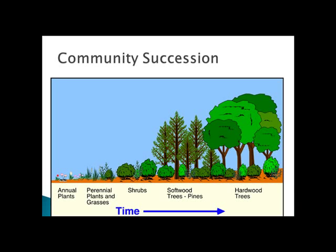Natural changes in a community take place over time, and that's called community succession. Primary succession is when new land is formed, like a volcano erupts from the sea and it cools — that's new land — and then it's colonized by life. That's primary succession.